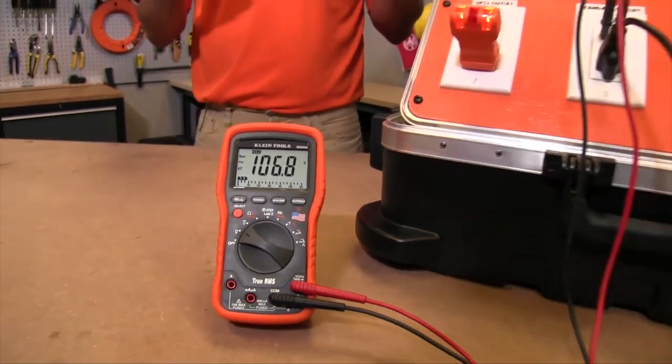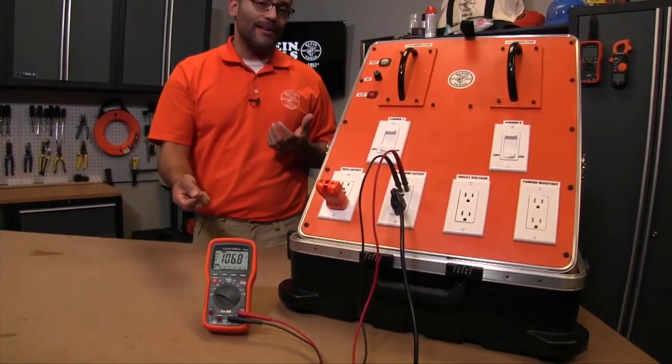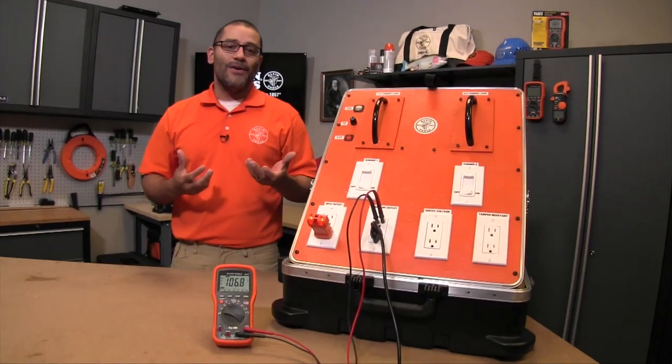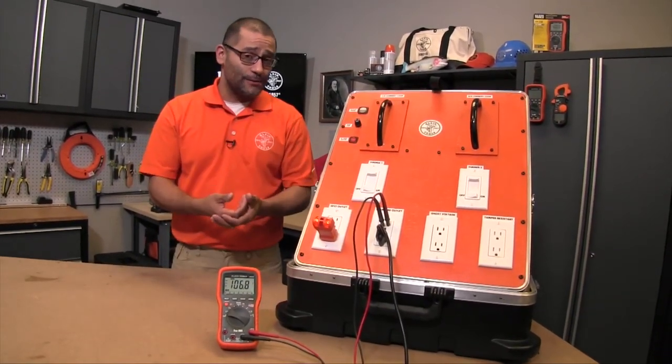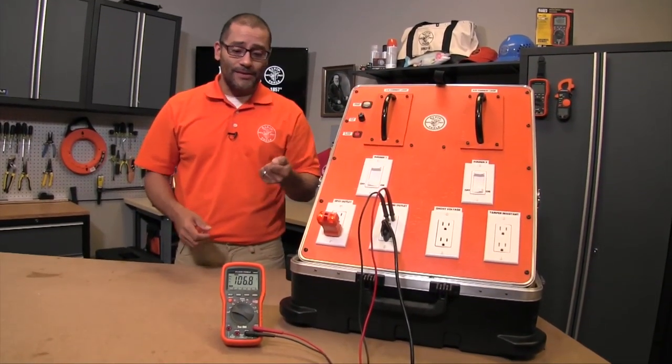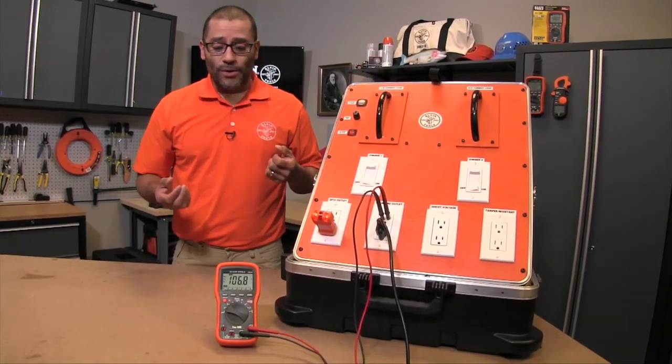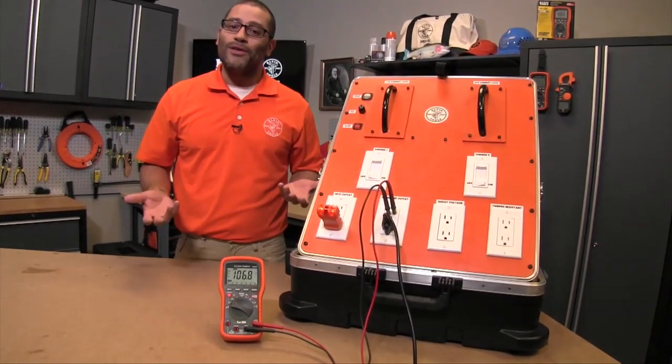Now that's great if you can press the button, but what if you're taking a measurement in an area where you can't have both hands full? You've got your hands with your leads in them, but you can't really hold the meter. In that type of situation we would want to use auto hold.